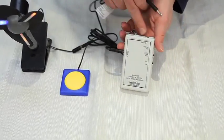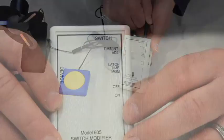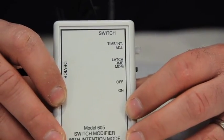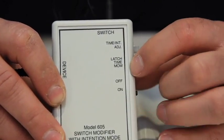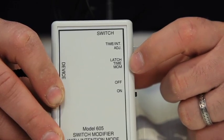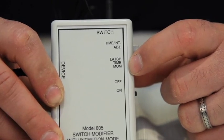And then there's an additional jack here on top marked for your switch. Now there's three modes on this. There's momentary which is what the switch already does. Time and latch.